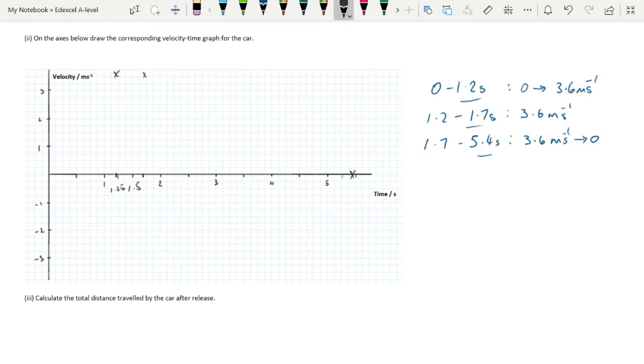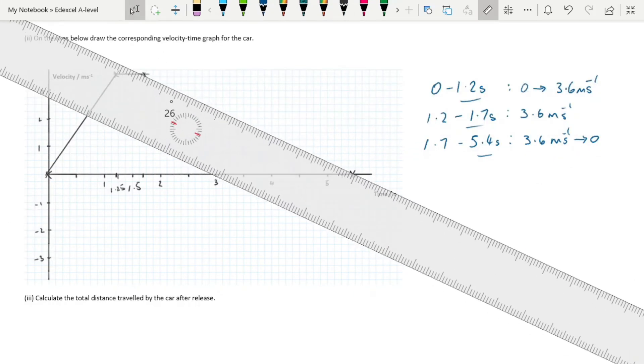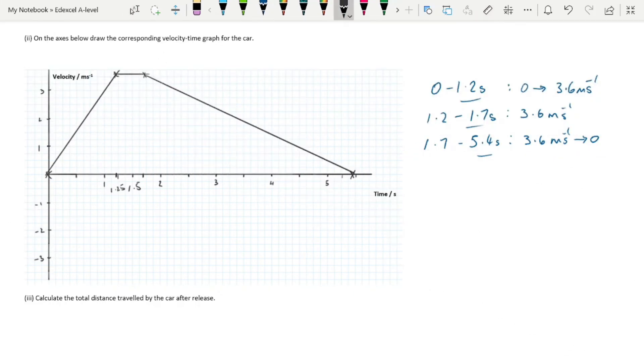Once we've done that, we're just joining up our sections. We know that these are going to be straight lines because we've got constant acceleration, zero acceleration in the second section, and then a constant deceleration. There's our velocity-time graph. You might be able to do this slightly better on pencil and a piece of graph paper.